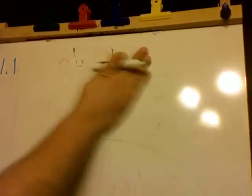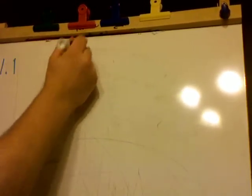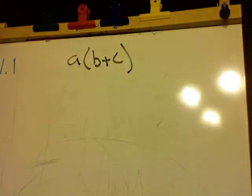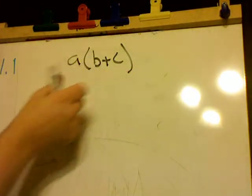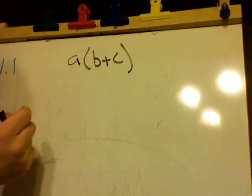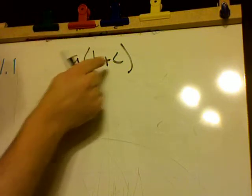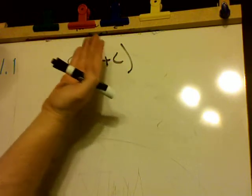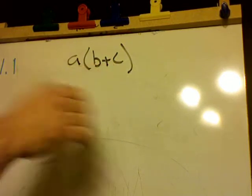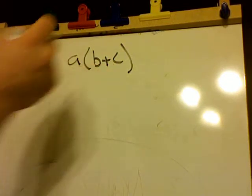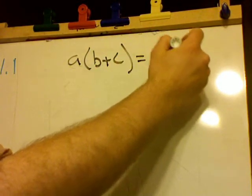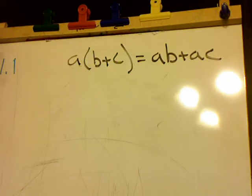So now, distributive law. So when you're multiplying two things like this, remember you always do what's inside the parentheses first. So whatever's inside the parentheses here, you're getting a number. You're taking B, and you're adding C to it, and you get a number. Then you take that number, and you multiply it by an A. Sometimes we don't always know what those numbers are. So we can use the distributive law, which would say A times B plus A times C.